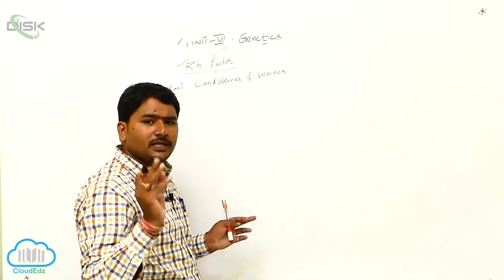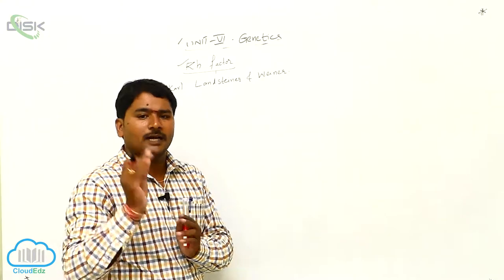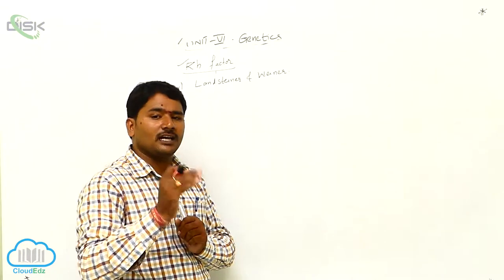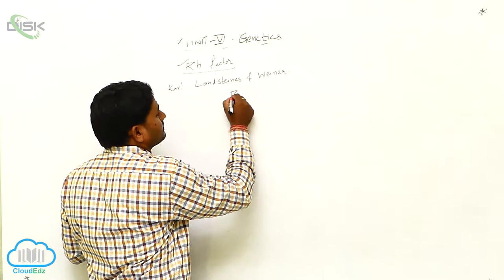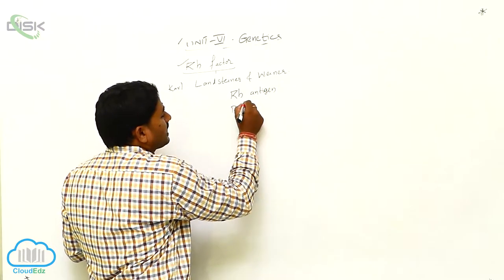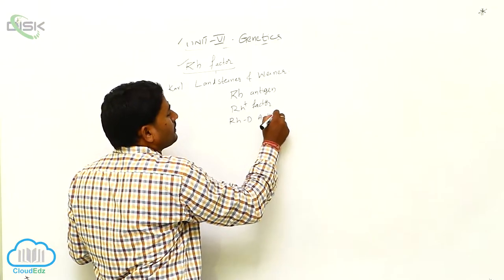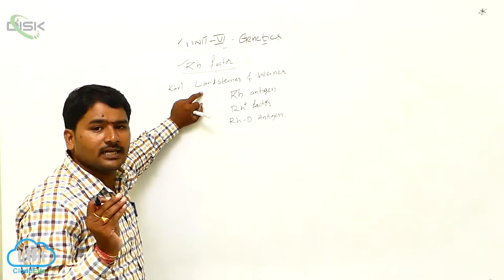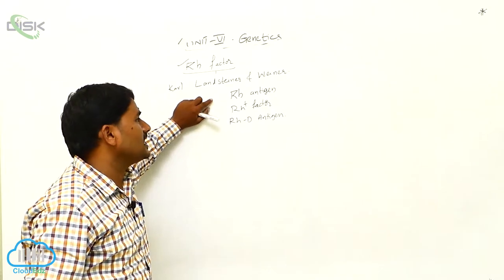How many antigens are there on the RBC? Two antigens — A antigen and B antigen are on the plasma membrane of RBC. But Landsteiner, Steiner, and Wiener discovered one more antigen besides A and B. That third antigen is called the RH antigen, also called the RH factor or RH-D antigen.